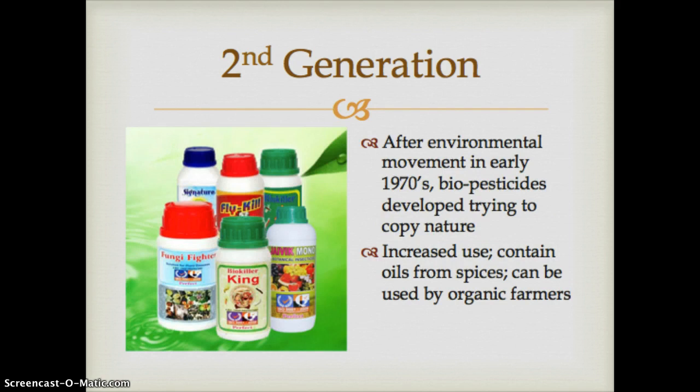Next we'll look at some different types of second generation pesticides. Since the 1970s, and definitely making a resurgence today with the organic movement, is the use of biopesticides. These came about in the 1970s and represent a return to first generation concepts — developing pesticides that mimic nature. These might include oils from spices and similar natural products. Organic farmers can use these and still consider their food to be organically grown.